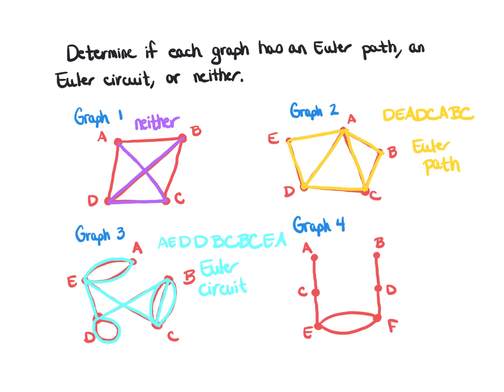Looking at graph number four, you would have to start at A and end at B or vice versa since there's no other way in or out. However, no matter which route you attempt, you cannot reach all edges without retracing a step. This graph is also an impossibility — I cannot travel every edge exactly once.